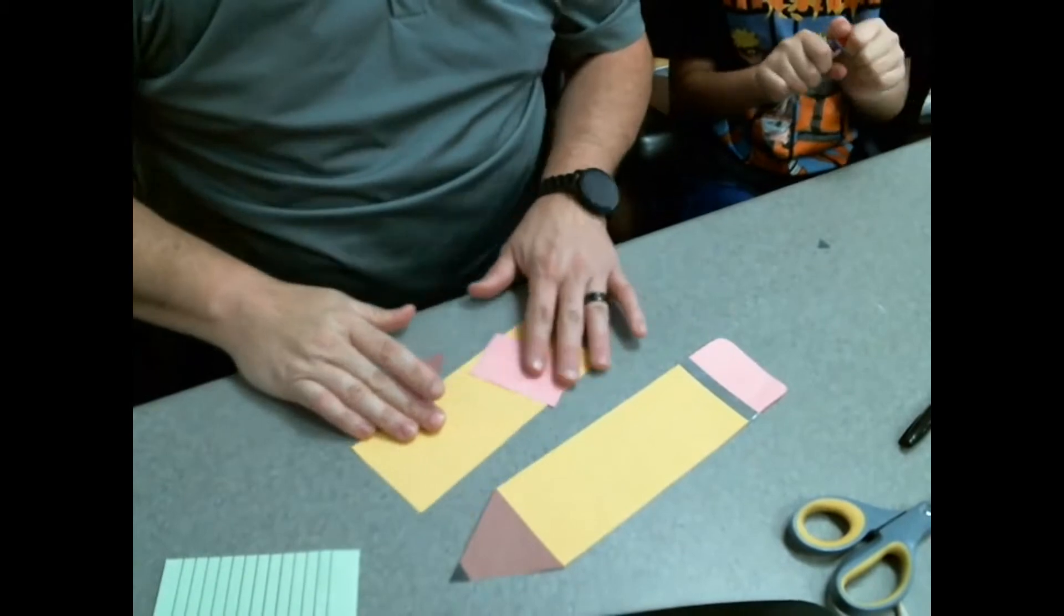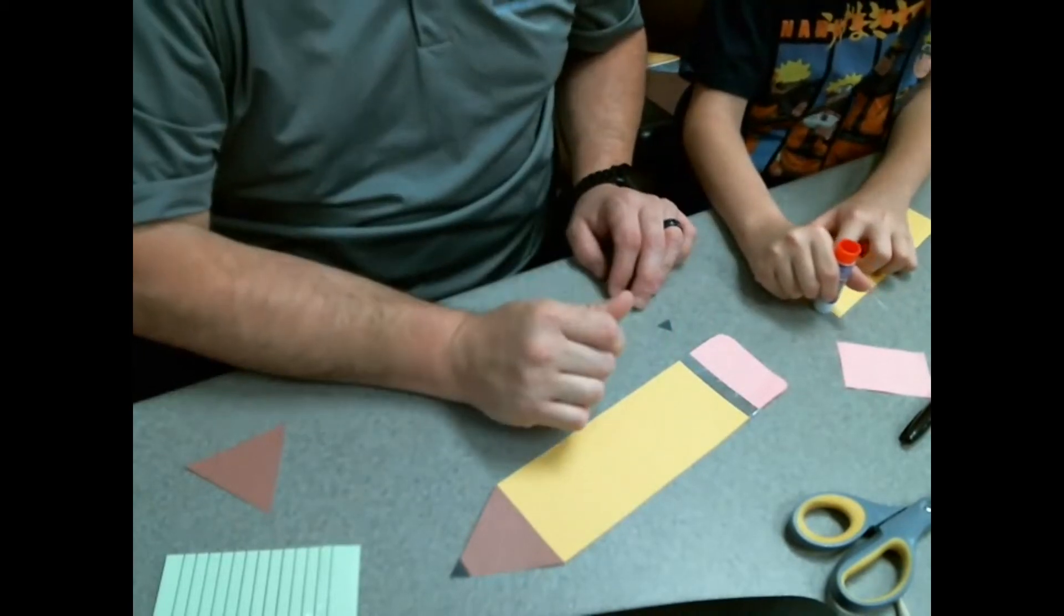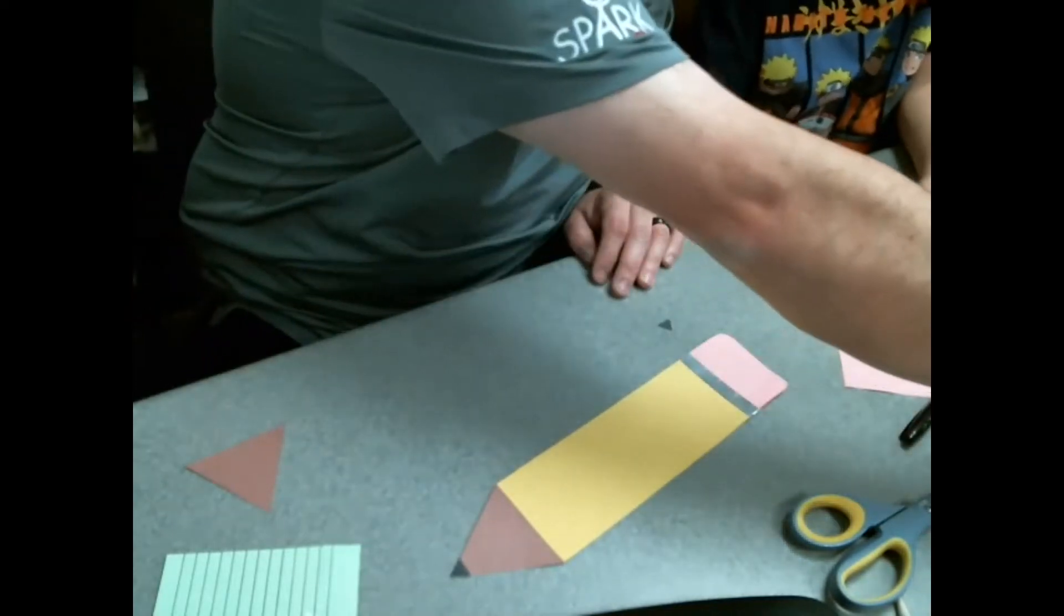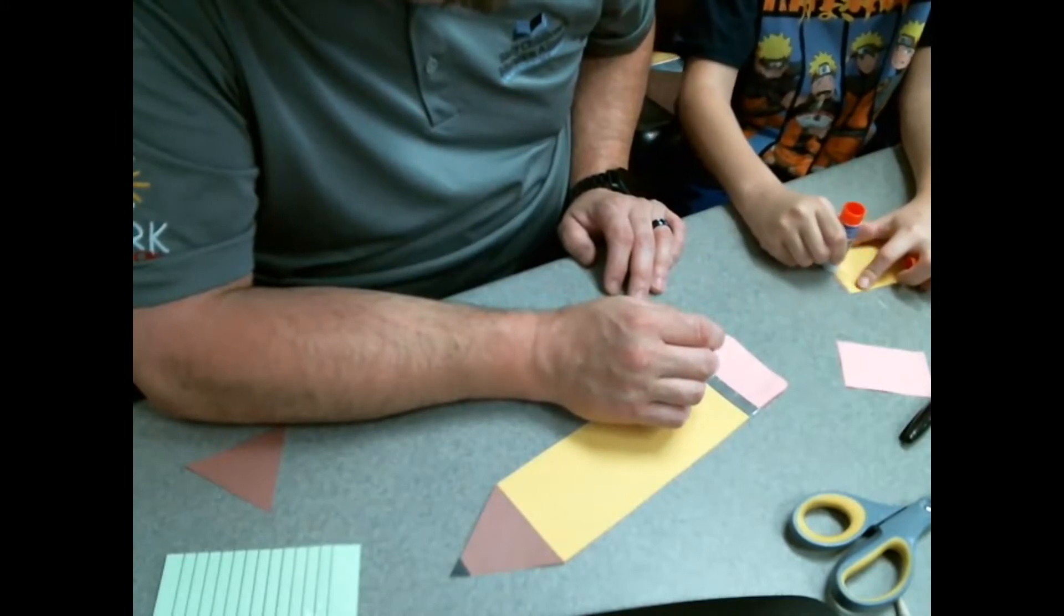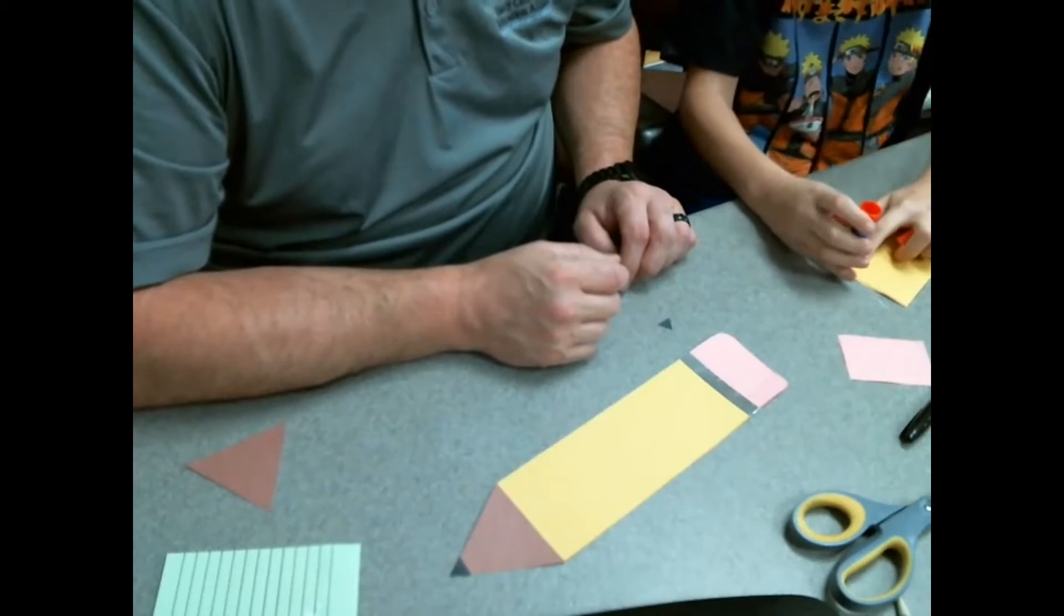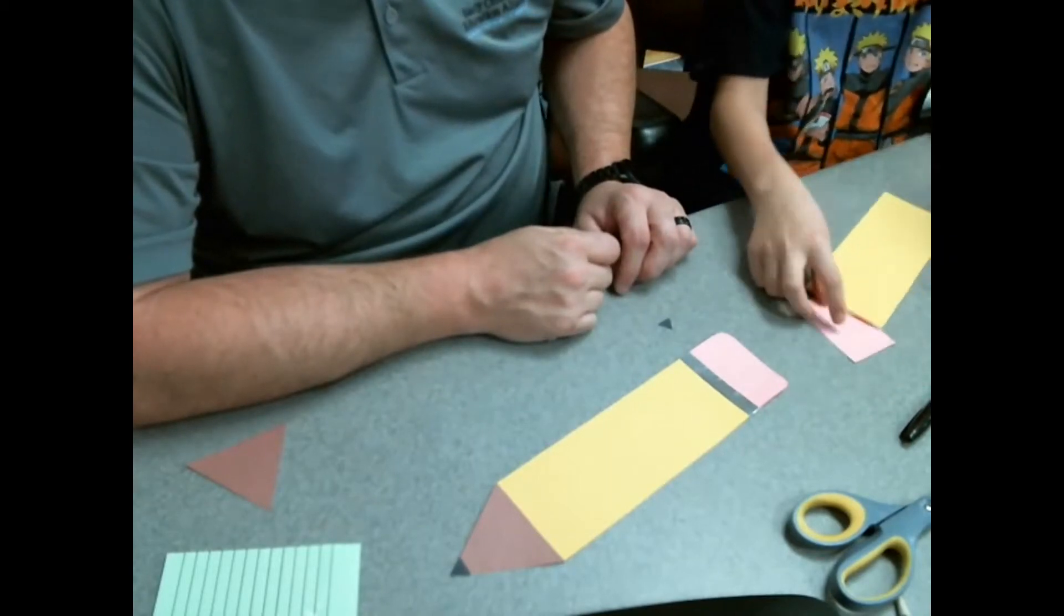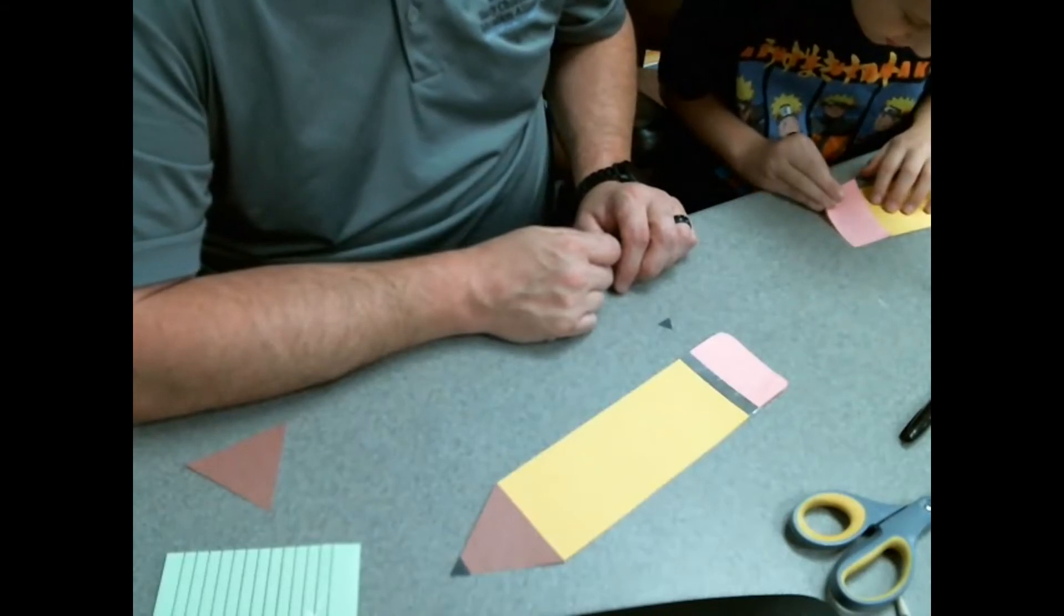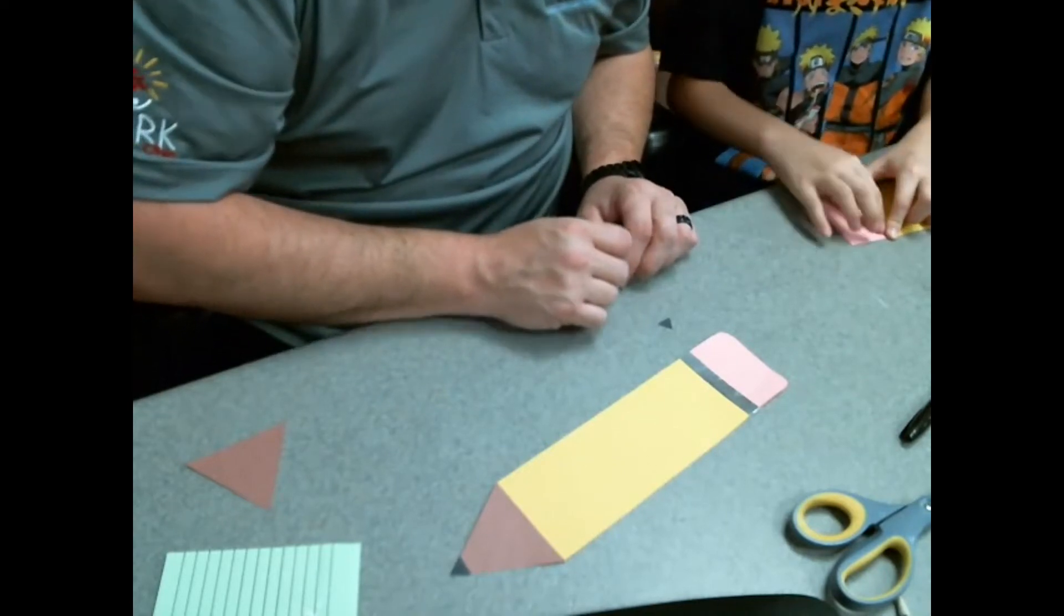I'm gonna have Alex start gluing this together. So we're gonna tip this down, and you're gonna start with your pencil part, run a glue strip there on the end. Okay, and we're gonna glue the eraser part on there. Now when you're putting this on here you're gonna want to try and get it as straight as you can, but if it's not perfectly straight that's fine because we're going to do something else to it.